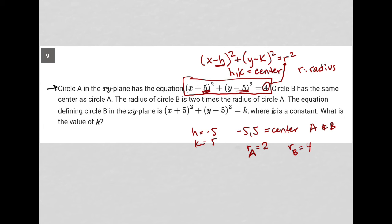The equation defining circle B in the xy plane is all of this, where k is a constant. What is the value of k? Well again k is in the position of the r squared, right? Like that's where r squared goes, on the right side of the equal sign of the circle equation. We know for circle B that r is 4, so k is simply 4 squared. k is 16, and the answer to our question here is 16.